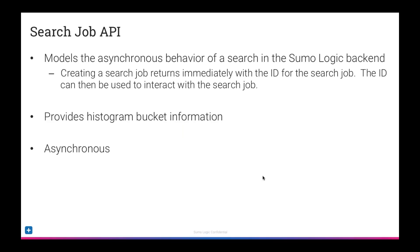Let's talk about the Search Job API. It models the asynchronous behavior of a search in the Sumo Logic backend. You create a search job, immediately get back the ID for that job, and then interact with the API using that ID to check status — is it done, is it still running, can I get the messages, can I get the records? The API also provides histogram information, just like the UI. It's asynchronous: you execute a call, get back an ID, and the system runs in the background while you continue interacting with the API.